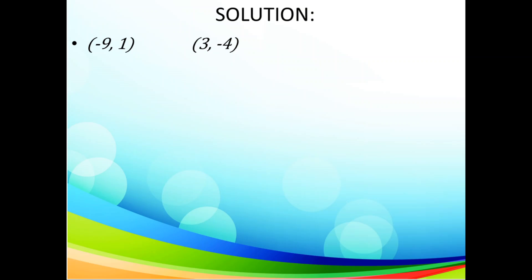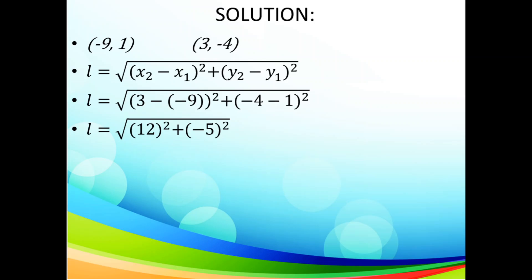So we write our coordinates and we write our formula and then we substitute. So we'll have 3 take away negative 9 and negative 4 take away 1. So when we simplify, 3 take away negative 9 is the same as 3 plus 9. That gives us 12. And negative 4 take away 1, the signs are the same, so you add and keep the sign. That gives you negative 5.